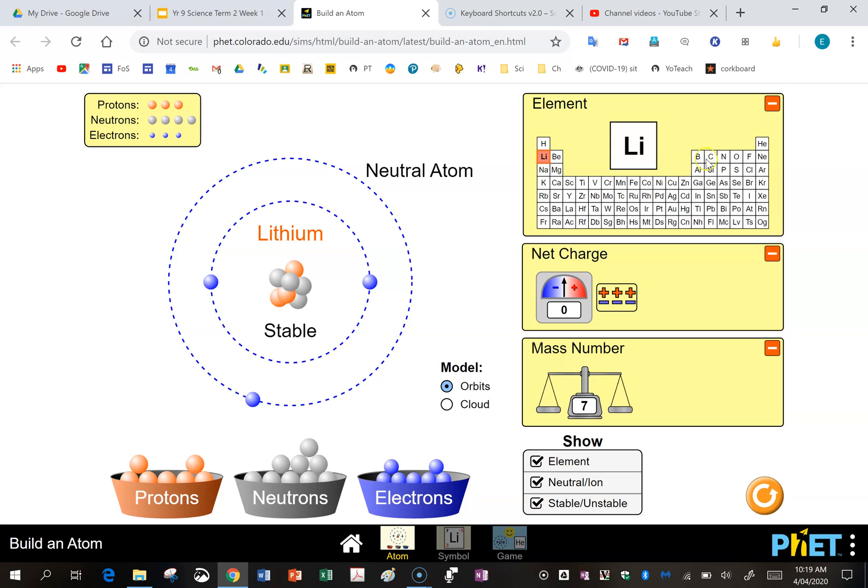The second shell can have eight electrons and that's the number across the row or period in the periodic table. One, two, three, four, five, six, seven, eight. So the first shell is the first row in the periodic table and there's only two elements here, so only two electrons. The second shell is the second row of the periodic table and it has eight elements and therefore can have eight electrons.